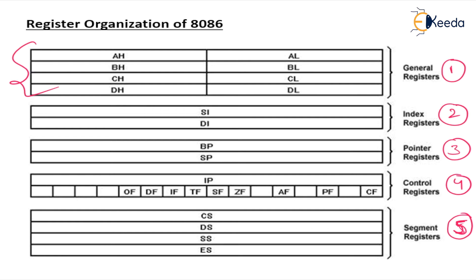The segment registers have already been introduced. CS means code segment, DS is data segment, SS is stack segment, and ES is extra segment. Now, totally how much memory do we have in the 8086 microprocessor? It has a 20-bit address bus, so we have 2 to the power of 20 address locations.